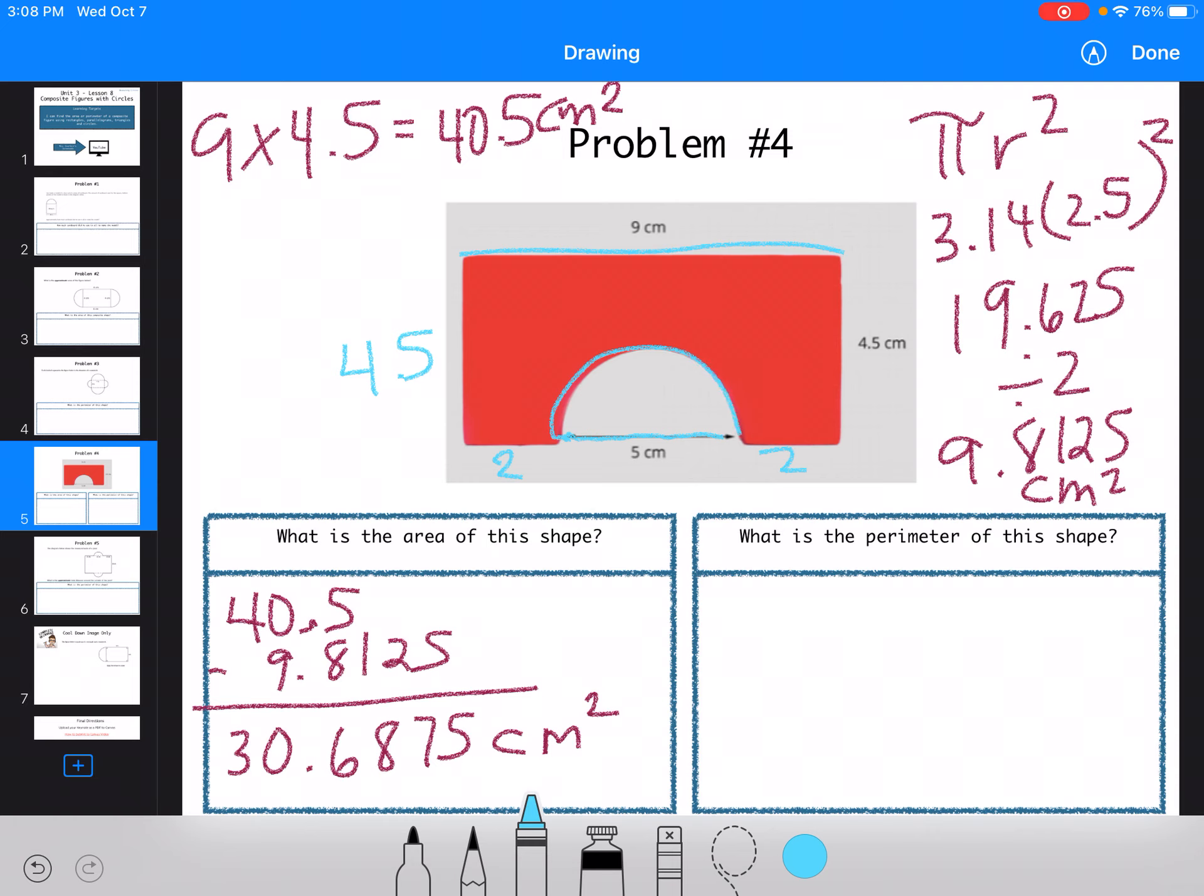So I'm using circumference. So C equals pi D. C equals 3.14 times 5. So 3.14 times 5. I get 15.7. But the problem is that's a whole circle. I only want half. So I have to still divide by 2. So I end up with this part being 7.85.